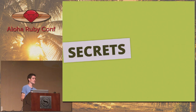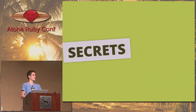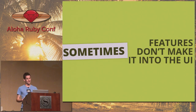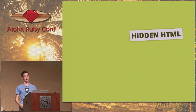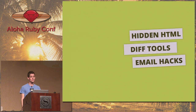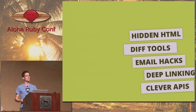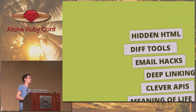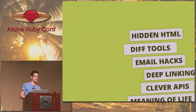So first, what is a secret? For Git, basically everything is a secret because the UI of Git is ridiculous. For GitHub, it's sort of features that don't make it into the UI — hidden HTML, diff tools, email hacks. We have a bunch of different things we put inside the website that we don't necessarily make a big deal about or announce. We may not add buttons to these things, but we still have them in the product.